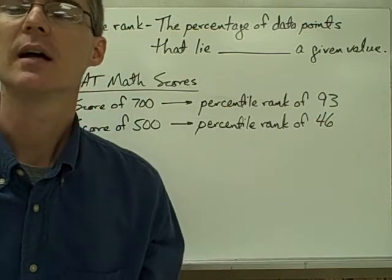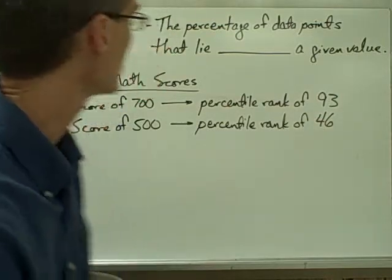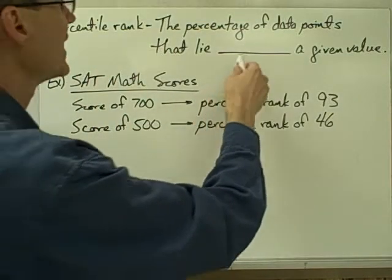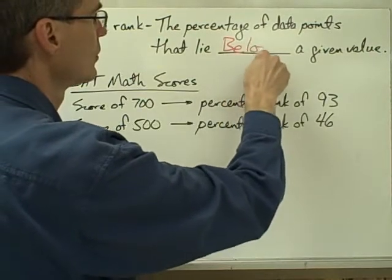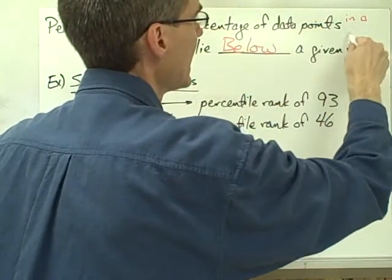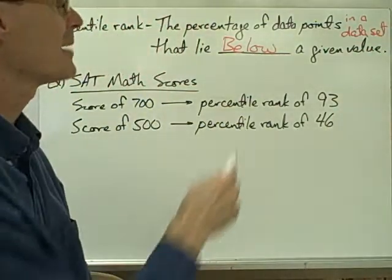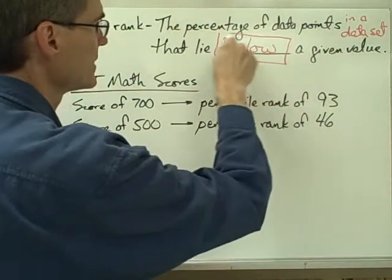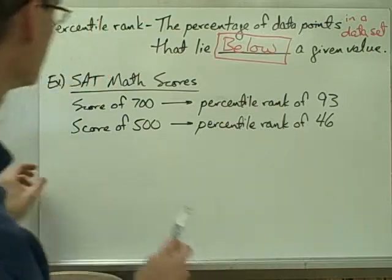Percentile rank is a topic that is often related to histograms. Percentile rank means the percentage of data points that lie below a given value — that is, the percentage of data points in a data set that lie below a given value. This is the critical part: it's the percentage of data points that lie below a given value.